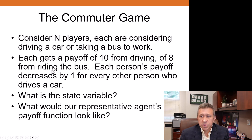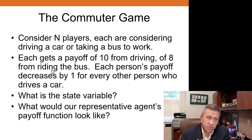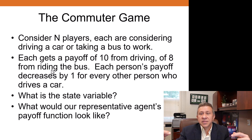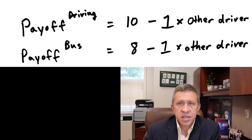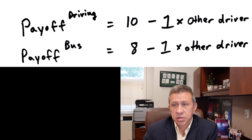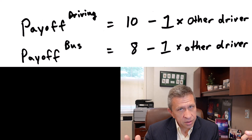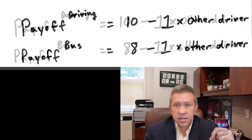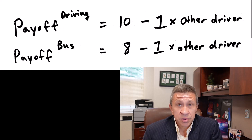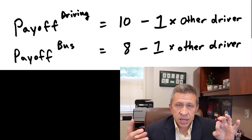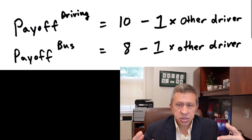We have N players, each with the same payoff function — this is our representative agent, everybody has the same payoff function. The payoff from driving equals 10 minus 1 times each other driver on the road. The payoff for taking the bus equals 8 minus 1 times each other driver on the road. Those are the representative agent's payoff functions in equation form.